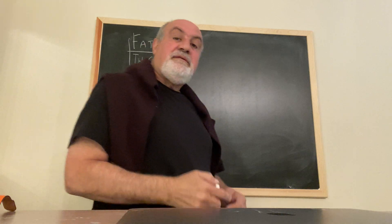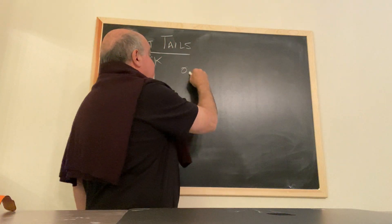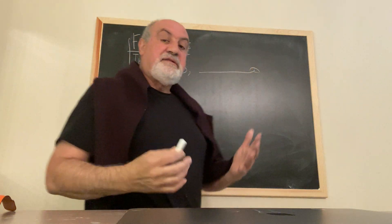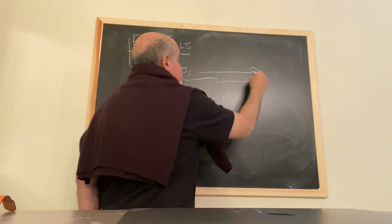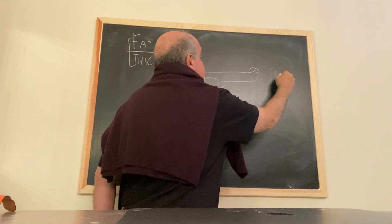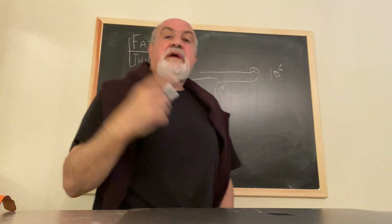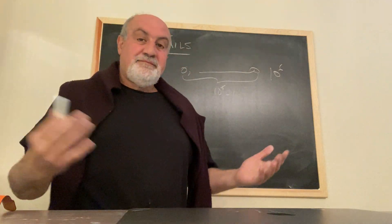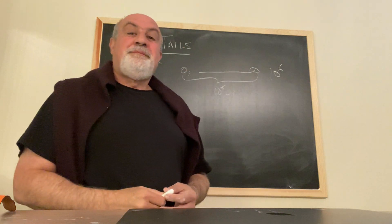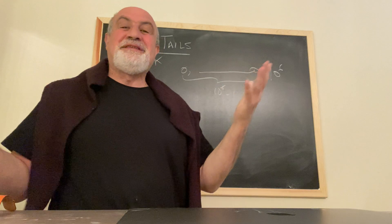Let's take a case of an extreme fat tail process. You had a million minus one observations at zero, and then one observation at a million. What is the average? One. But all of it came from one observation. That's fat tails.